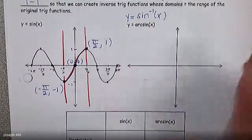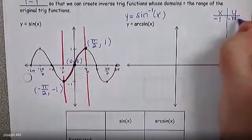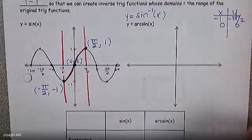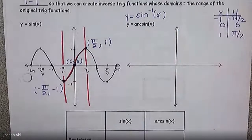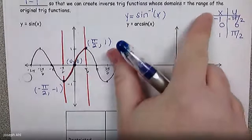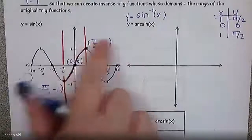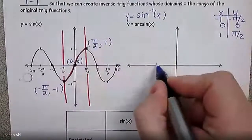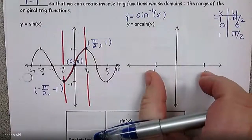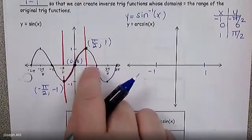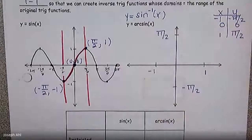To graph the inverse, I have three points. If I switch the x and y values, it would be (−1, −π/2), (0, 0), and (1, π/2). The values −1 to 1 used to be on the y-axis for sine x. For arcsine of x, those are the values on the x-axis — this is the new domain. And what used to be x values, −π/2 and π/2, those now become y values on the y-axis.